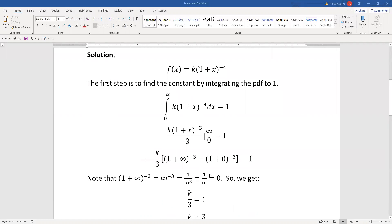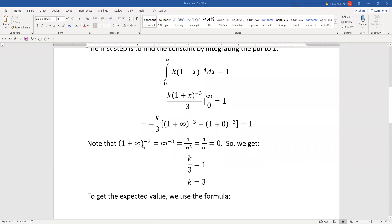And as before, (1 + infinity)^(-3) is just infinity^(-3), which is 1/infinity^3, which is 1/infinity, which is zero. So this ends up being K/3 on the left side and equals one, which means K equals three.